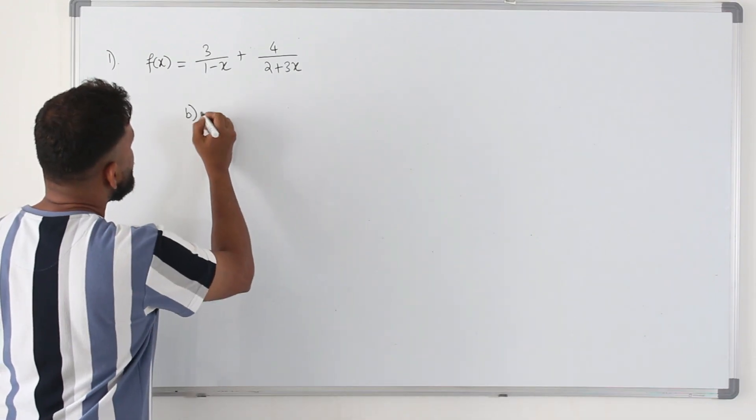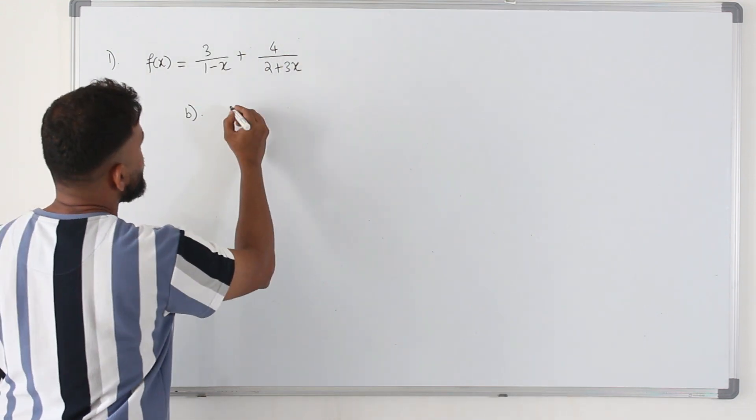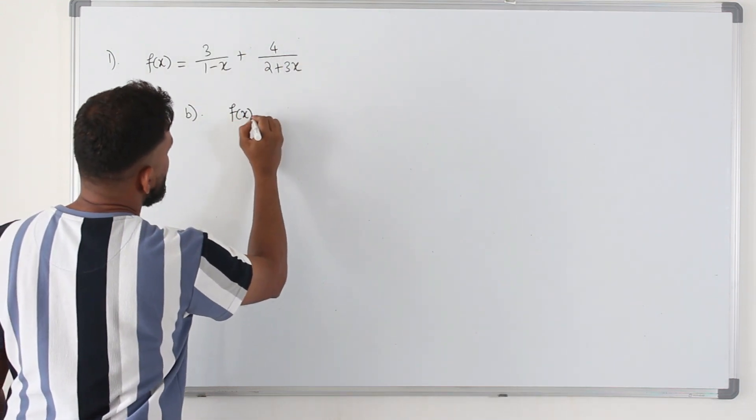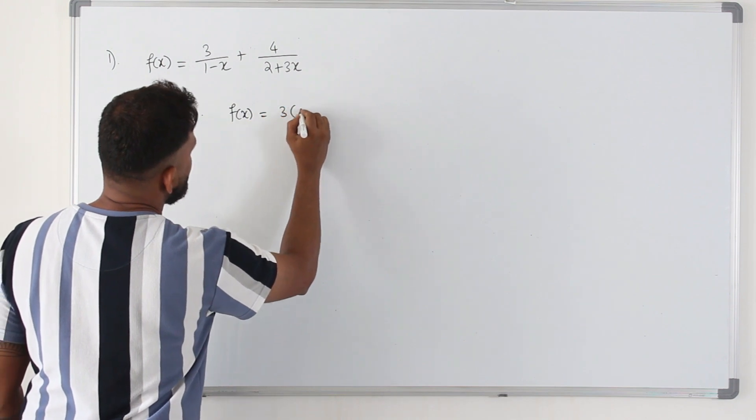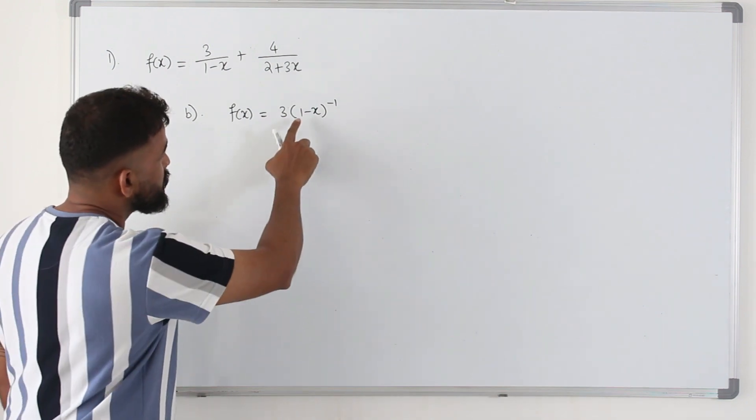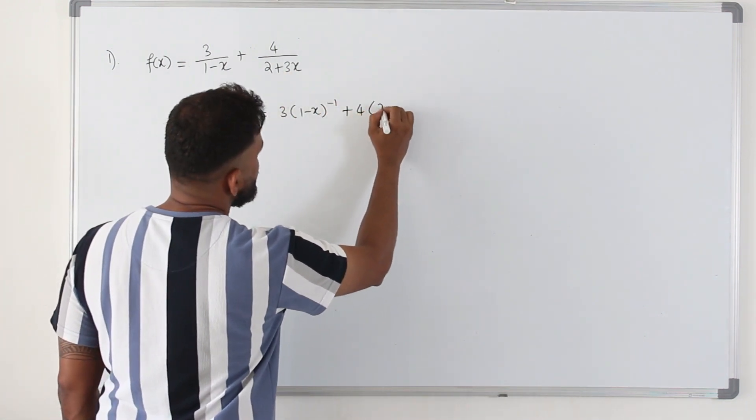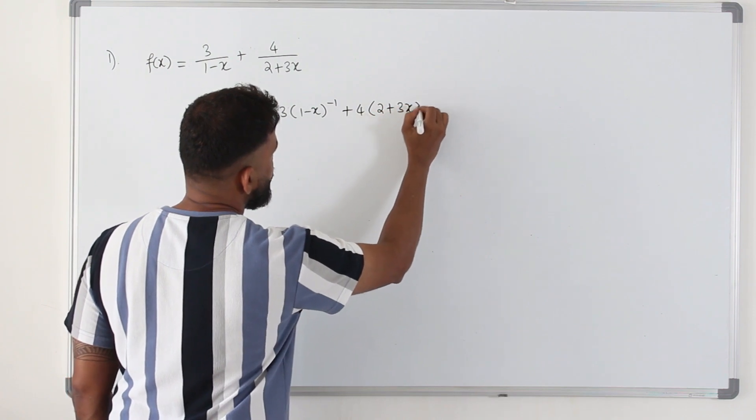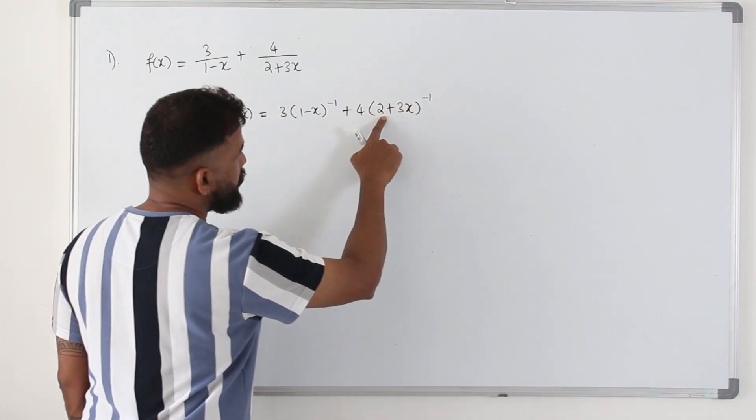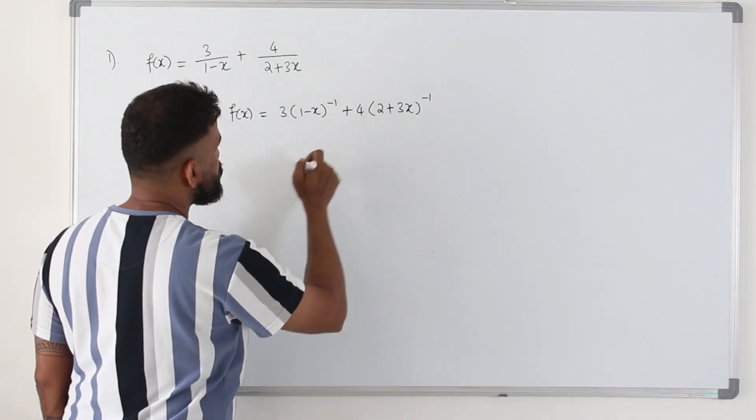Now in part B we are going to find the binomial expansion of f of x. We have two fractions here. Write the first one as 3 times 1 minus x power negative 1, where you can apply the binomial expansion because the first term is 1. But here if you write it in this form 2 plus 3x power negative 1, you cannot apply binomial expansion because the first term is not 1. So you need to take out these two as a common factor.